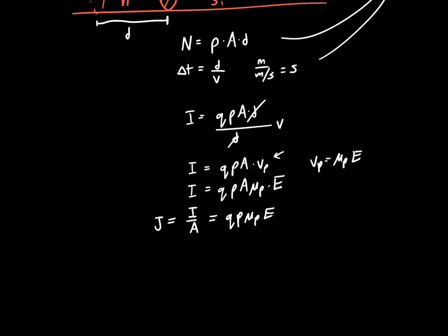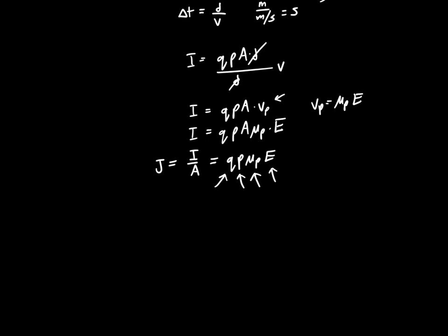And this makes sense, right? Because the current density should be proportional to the charge. The more charge you have per charge carrier, the higher the current. The more total charge carriers you have, the higher the current. And the faster they move, the higher the current. And the larger electric field you apply, the larger the current. So this equation makes sense. And so this was the equation for calculating the hole current. So Jₚ is just equal to Q times P times μₚ times E.